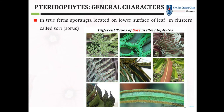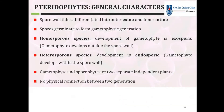The spore wall is thick and differentiated into an outer exine and inner intine. Spores germinate to form the gametophytic generation. Both homosporous and heterosporous species exist. In homosporous species, the gametophyte develops outside the spore wall — this is called exosporic development.